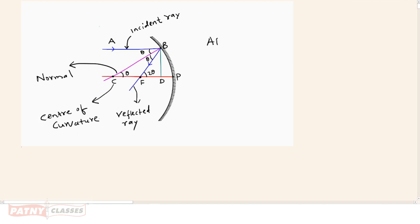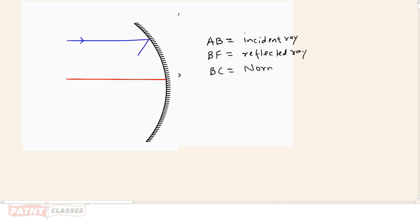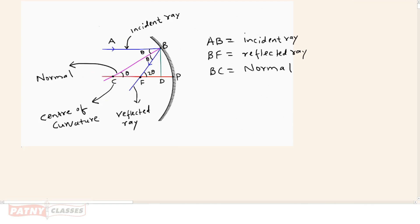Incident rays are parallel to the principal axis and very close to the principal axis. So, AB is the incident ray and BF is the reflected ray and BC equals the normal and C is the center of curvature.